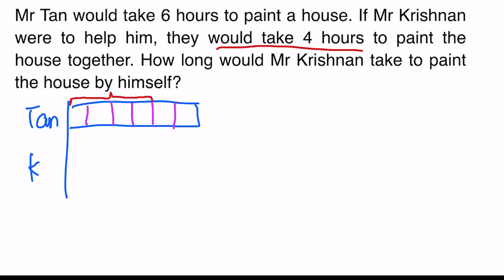For Mr. Krishnan, I do not know the rate that he took to paint the house by himself. But from the other sentence, Mr. Tan only took four hours to paint together with him — one, two, three, four. So if Mr. Tan were to take four hours, this is the part of the house he would paint. The other two units — the parts not painted — were actually painted by Mr. Krishnan, since they combined their effort. So Mr. Krishnan actually painted two units of the house.